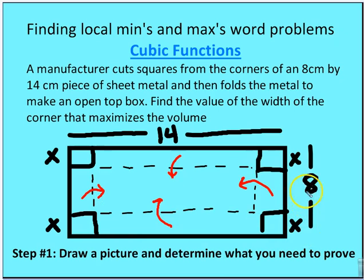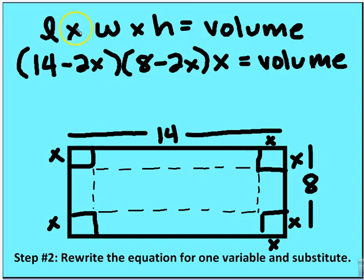We want to identify the length, the width and the height because the volume formula is length times width times height. So let's figure out length times width times height. The length is going to be 14 minus 2x, the width is going to be 8 minus 2x, and the height is going to be x. So here we have our polynomial.